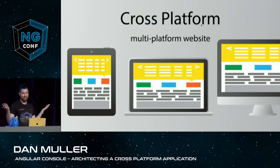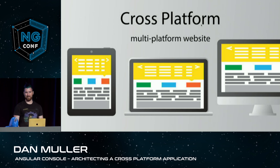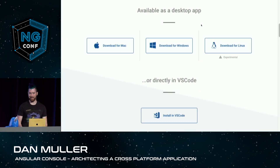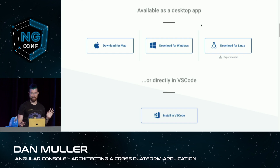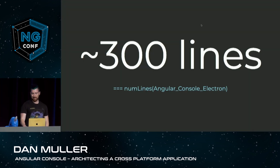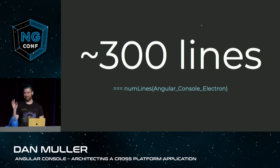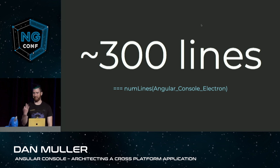So what does it mean to be cross-platform? At a very high level, it means you have a website, and you release it in a lot of places. For Angular console, which is an app I make at Narwhal, we have an Electron app which we release on Mac, Windows, and Linux. We also target code editors as a different platform, and right now we have one that you can install in VS Code. The surprising bit about this is it only took 300 lines of code to make the entire Electron app that targets three different operating systems.